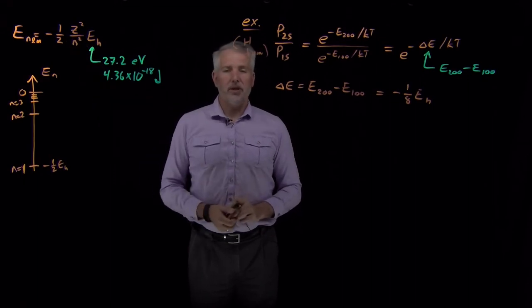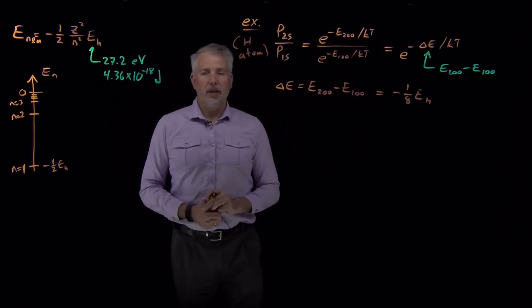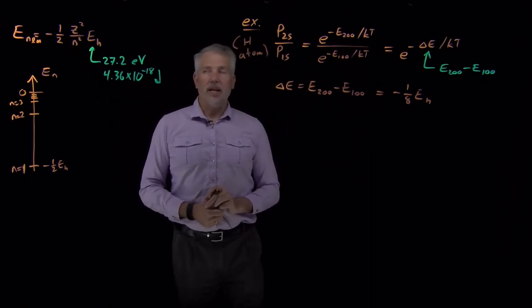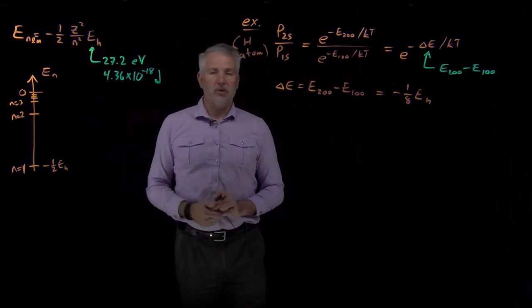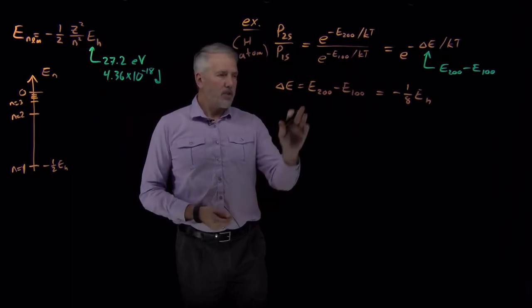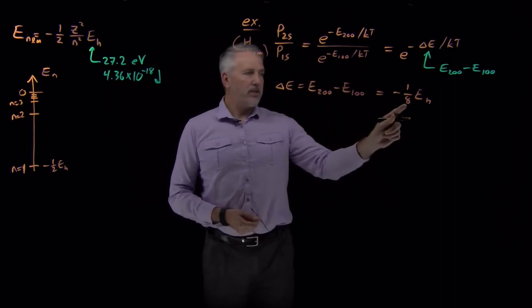If I were doing it for a helium plus ion, it would be different numbers because I would use a different atomic mass. So energy of the 2,0,0 state is minus 1/8 of a Hartree. Energy of the 1,0,0 state, as we've said, is minus 1/2 of a Hartree.